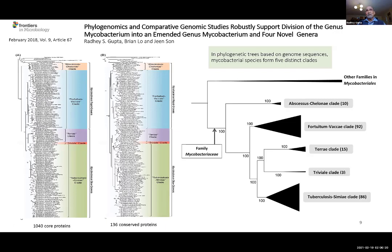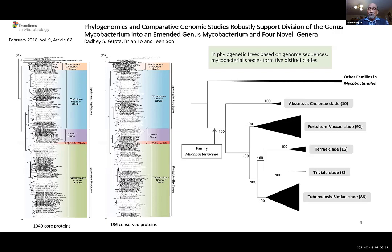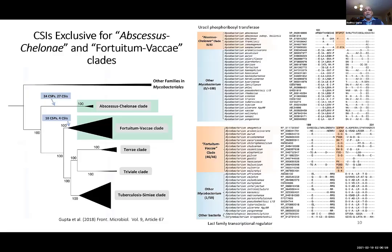The phylogenetic tree, as I mentioned previously, does not tell you anything about what unique properties are shared by different groups of microorganisms. Also, the branching order of species in a tree can often be variable, and in most cases trees are based on 16S ribosomal RNA or other single genes, which are not very reliable. So our next task was to use genome sequences to identify molecular markers that are specific for different clades of Mycobacterium species.